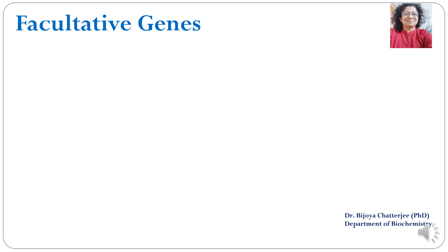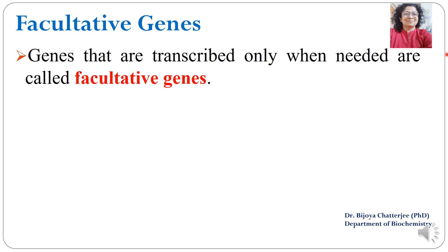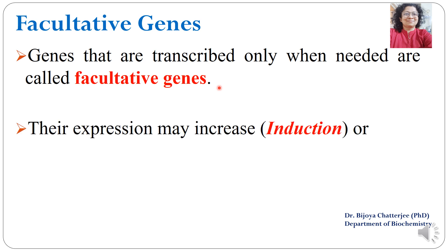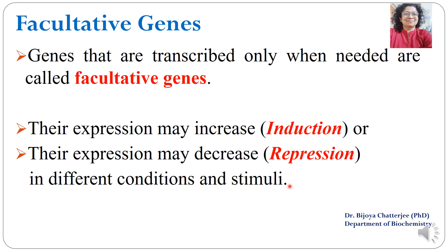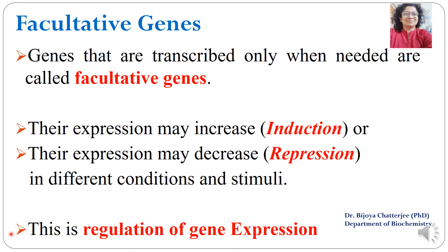The second class of genes are known as facultative genes — genes that are transcribed only when needed. These are generally silent and expressed when their products are needed. Their expression may increase, which is known as induction, or decrease, which is known as repression. It is the facultative genes that are under regulation, whereas housekeeping genes are expressed all the time.